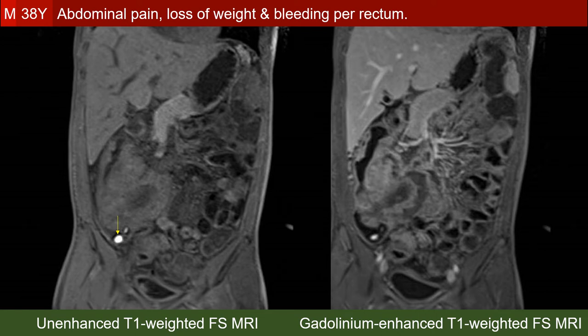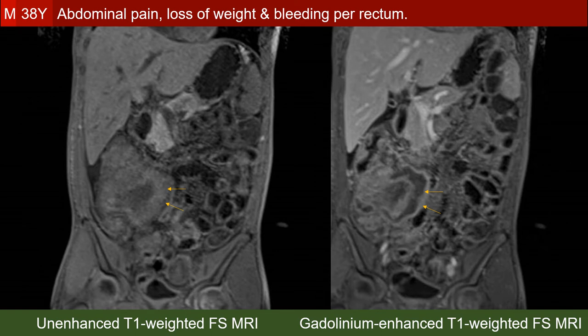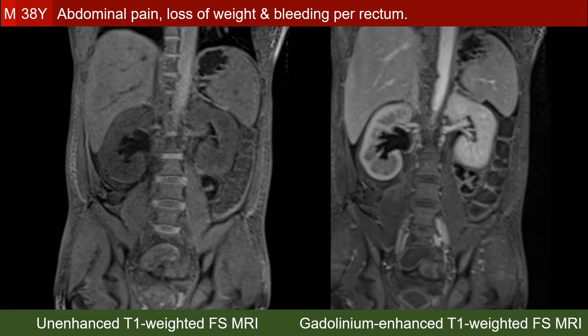This bright intraluminal cecal structure provides a very good clue to the diagnosis. We also see that the enhancement of the lesion involves its periphery and leaves very large areas within the lesion unenhanced. Here we have the right hydronephrosis and impaired excretion of contrast agent by the right kidney.